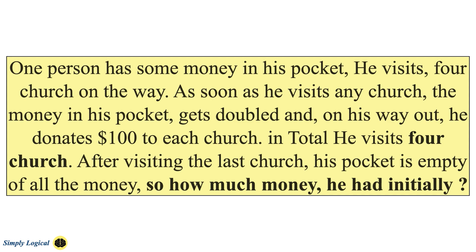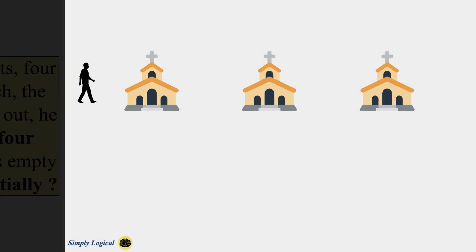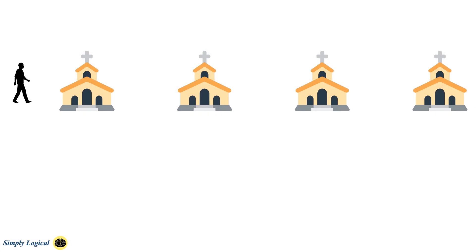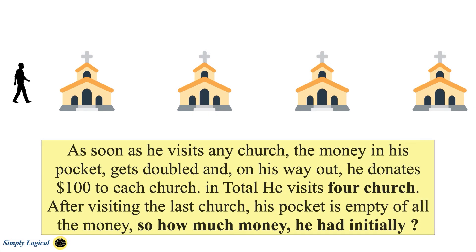So, how much money did he have initially? Let me simplify the puzzle. One person has some money in his pocket. He visits 4 churches on the way. As soon as he enters a church, his money gets doubled and he offers $100 in each church. Thus, his pocket gets empty after he returns from the 4th church.